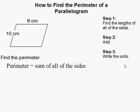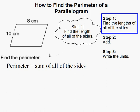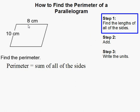How to find the perimeter of a parallelogram. The first thing you need to do is find the lengths of all the sides. We're already given 10 and 8 centimeters here, so I should know that this side is also 10 and this side is 8.